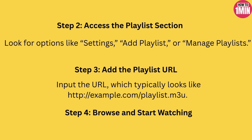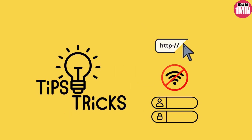Step four is to browse and start watching. Once the playlist is added, you will see a list of available channels or content. Browse through the options, select what you want to watch, and start streaming. If your playlist URL isn't working, double check the link or contact your provider for a valid one. For buffering or lag, ensure your internet connection is stable.